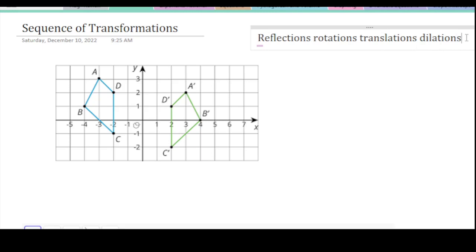Dilations are the only ones that change size. All the rest of these are going to stay the same. So reflections is a mirror image or a flip. A rotation is a turn. A translation is a slide. And a dilation is getting bigger or smaller.